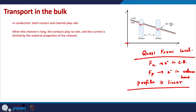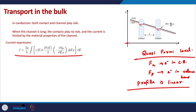Starting with our expression for current, in near equilibrium for any material we have: I = (2q/h) × integral of [γπ dE/2 × (−∂F/∂E) × δE_F] dE.